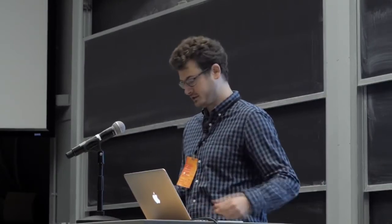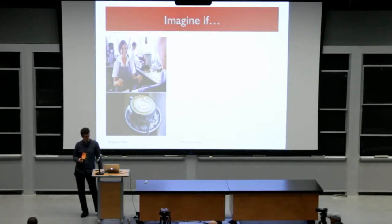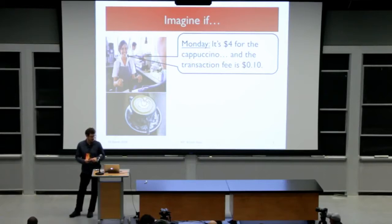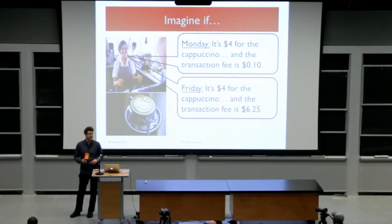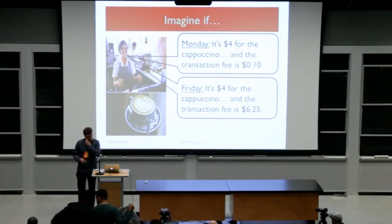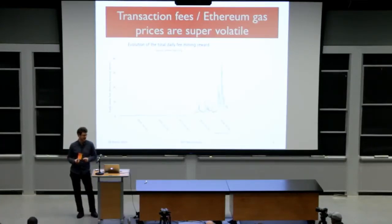Let me start with maybe a bit of a grim picture. Imagine that tomorrow you're going to go buy your coffee as always - it'll cost four dollars, it's Boston - and you're going to pay a transaction fee of say ten cents with your credit card. Then you come back at the end of the week and you pay the same amount for the same coffee, but suddenly you pay six dollars in transaction fees. In cryptocurrencies, that's actually what transaction fees look like - they're extremely volatile.